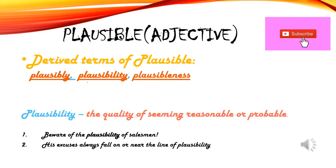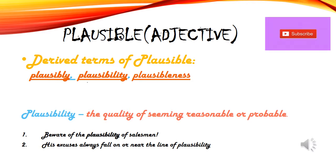Second derived term: plausibility — the quality of seeming reasonable or probable. Example: Beware of the plausibility of salesmen. Jab salesman kisi product ke baare mein describe karta hai, wo bahut plausible hota hai. Isliye kaha gaya: beware of the plausibility of salesmen.